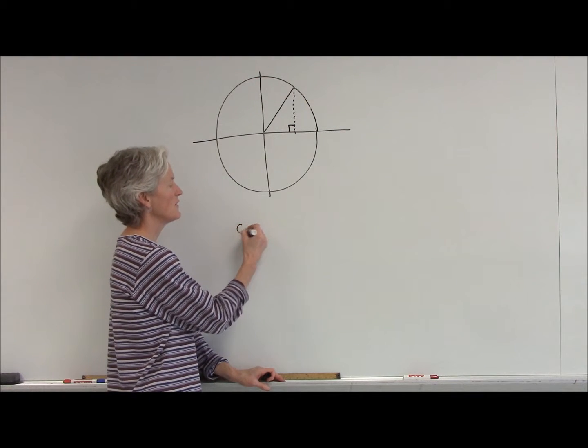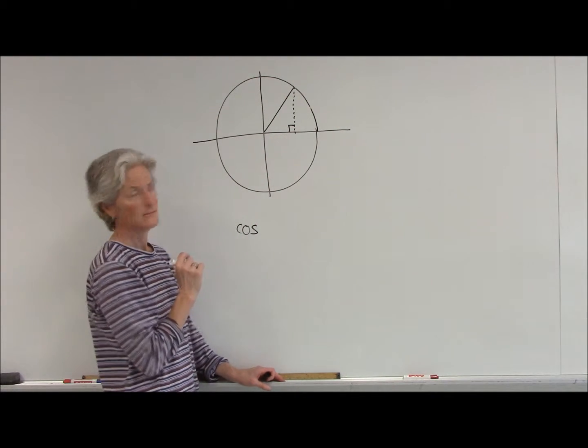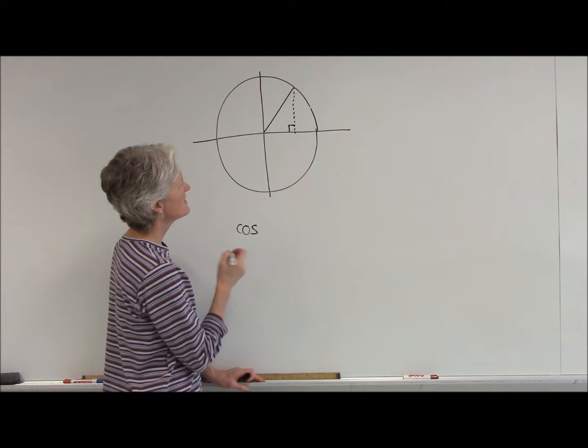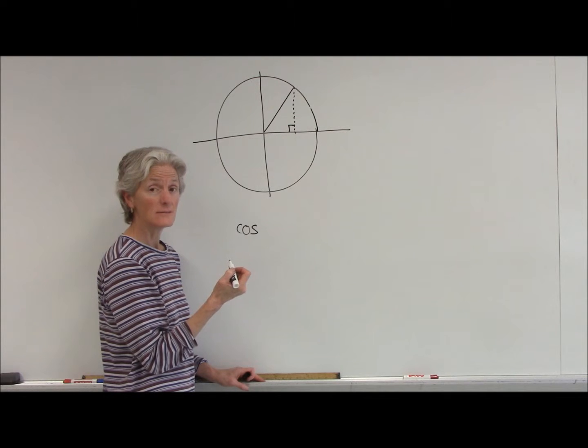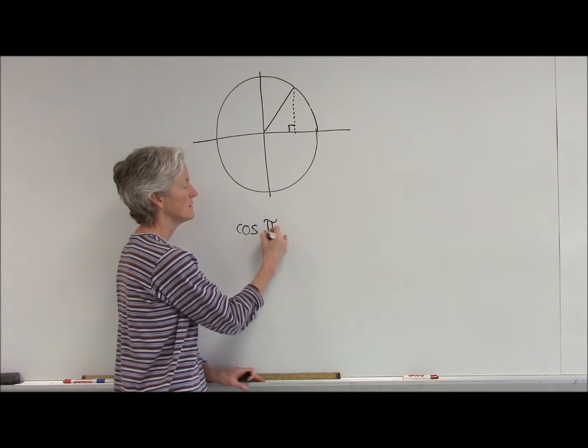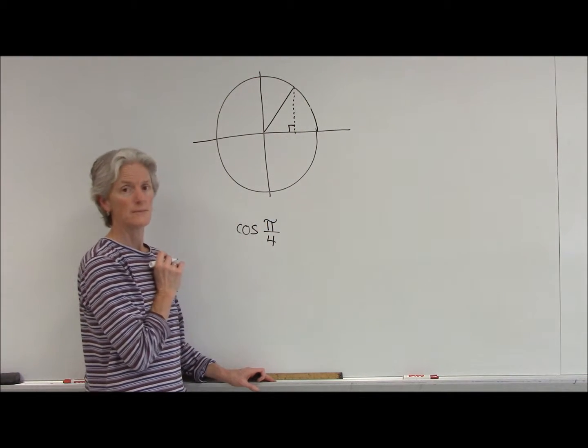Let's say I want to find the cosine of that angle, and let's say that's 45 degrees. Now, in radian land, 45 degrees is pi over 4.